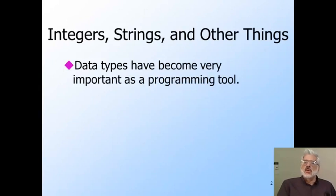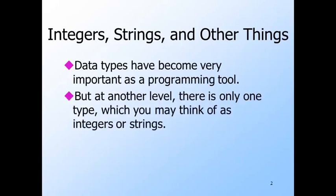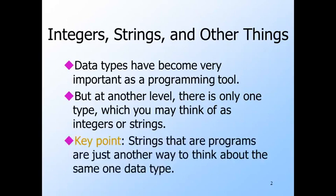If you took a modern course on programming, you were undoubtedly introduced to the importance of data types or classes. But when you look under the hood at how these types are represented inside the computer, you'll see that there is only one type: strings of bits. We could base our whole theory on strings of bits, but it is more convenient to convert binary strings to integers. We can almost see how to do that, since integers can be represented in binary notation, but there's a small glitch we'll get to. Also, remember that the programs computers execute are, under the hood, just strings of zeros and ones, and therefore can be regarded as integers.